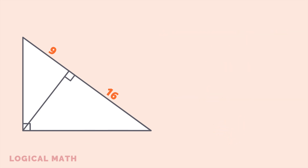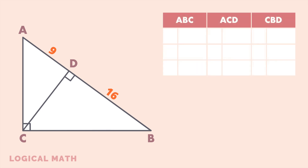Mark the large triangle as ABC and the height as CD. The height forms two more right triangles: ACD and CBD. Let's take a look at the angles of all three triangles.